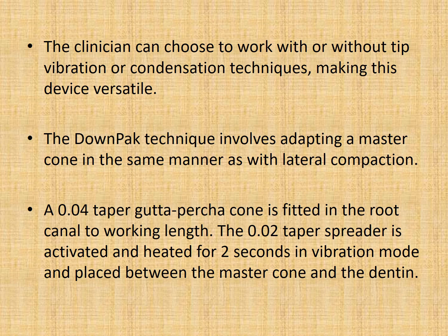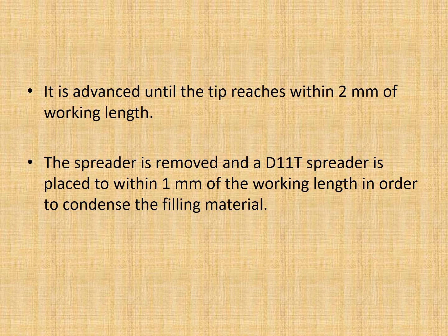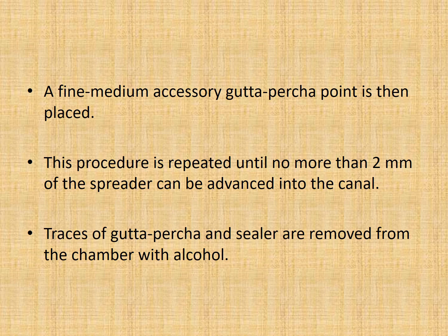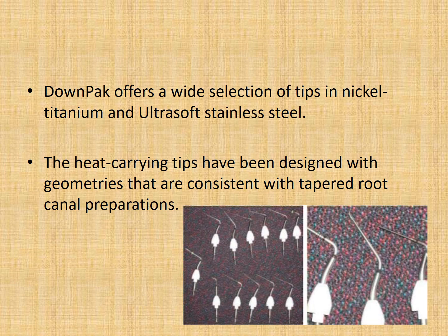The Downpac technique involves adapting a master cone in the same manner as with lateral compaction technique. A 0.04 taper gutta percha cone is fitted into the root canal up to the working length. A 0.02 taper spreader is activated and heated for 2 seconds in vibration mode and placed between the master cone and the dentine, advanced until the tip reaches within 2 mm of the working length. The spreader is removed and a D11T spreader is placed up to 1 mm of working length to condense the filling material. Fine and medium auxiliary gutta percha points are then placed, and this procedure is repeated until no more than 2 mm of spreader can be advanced into the canal. Any traces of gutta percha and sealer present within the chamber are carefully removed with alcohol.